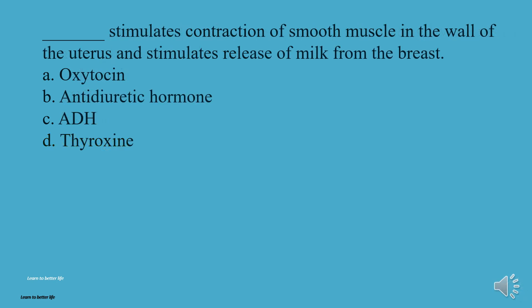What stimulates the contraction of smooth muscle in the wall of the uterus and stimulates release of milk from the breast? A, Oxytocin. B, Antidiuretic Hormone. C, ADH. D, Thyroxine. The answer is A, Oxytocin.